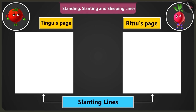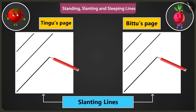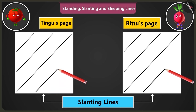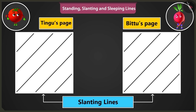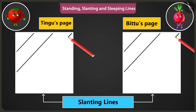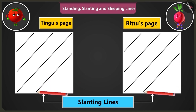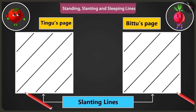Come on, now let's practice making slanting lines. We have to make lines from the bottom left part to the top right part, like this, one by one. See! Wow, this is so much fun. Now slanting lines are to be drawn from the top right side of the page towards the bottom, like this. Now my lines are turning out perfectly fine. You are doing very well.